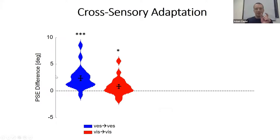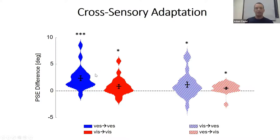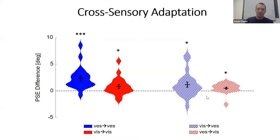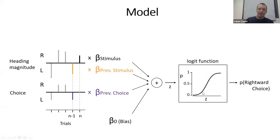We calculated the PSE shift to quantify this. Both vestibular-to-vestibular and visual-to-visual unisensory conditions led to significant within-sense adaptation. Significant cross-sensory adaptation was found in both directions as well. Basically, this shows that adaptation goes beyond a single sense — in order to adapt cross-sensory, the system must be experiencing and adapting the overall multi-sensory perception of self-motion.